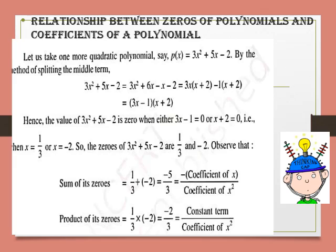Again we will find the sum of its zeros. We add the two zeros: 1 upon 3 plus (minus 2). If you solve it, you get minus 5 upon 3. Here 5 is the coefficient of x and 3 is the coefficient of x square, with a negative sign. Product of zeros gives you minus 2 by 3. Minus 2 is the constant term and 3 is the coefficient of x square. So by finding the zeros, we are getting the relation between the coefficients.